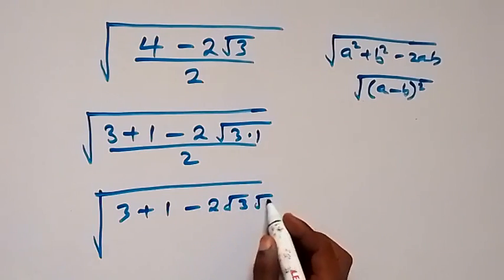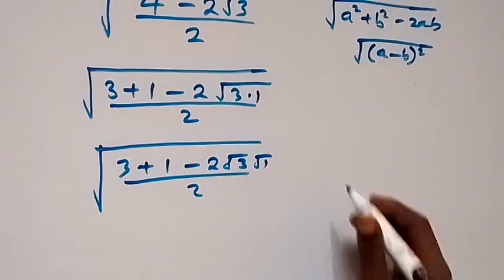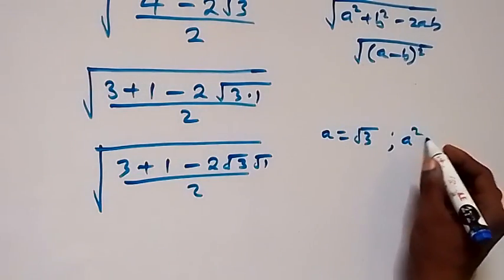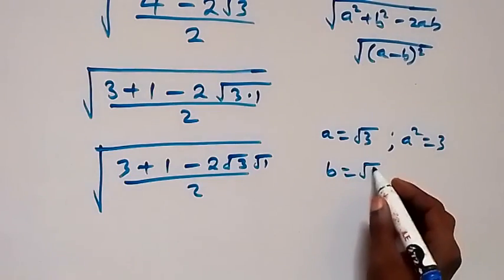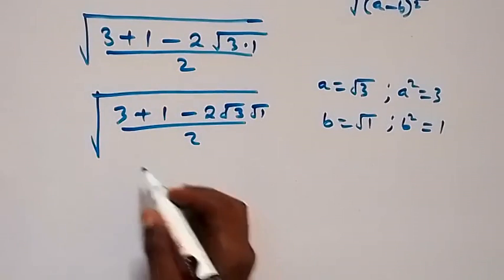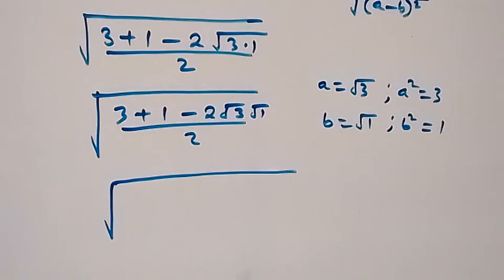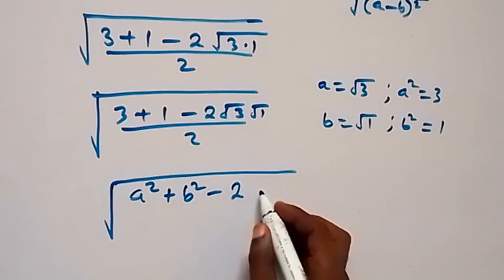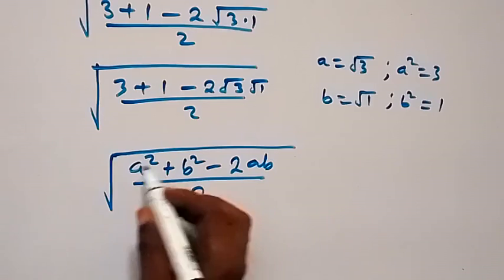Now here we let a be equal to root 3. So here a is root 3, that means a squared, a is equal to 3, so a squared is 3. Now we can, we have this, so a squared minus 2ab. Now you have a square root now plus 3. So we can say this is a square root of a squared plus b squared minus 2ab, now which is divided by 2.